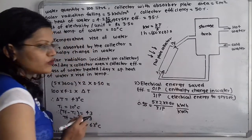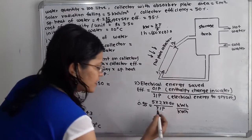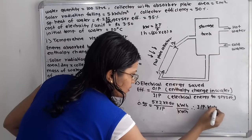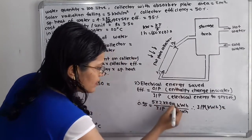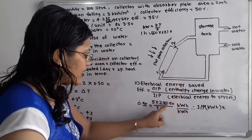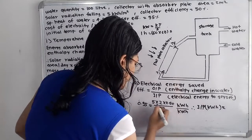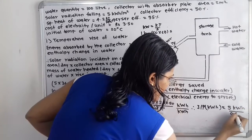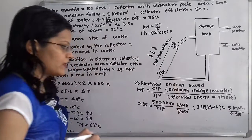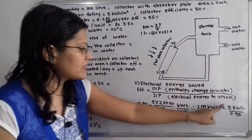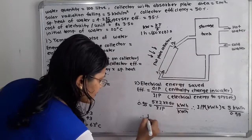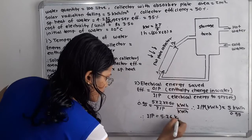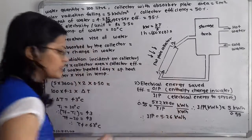Now we have to find out the input. Therefore input in kilowatt hour equals 5 kilowatt hour divided by 0.95. Calculating 5 divided by 0.95, we get input equal to 5.26 kilowatt hour. So this is our input — the daily electrical energy to be supplied to the geyser.